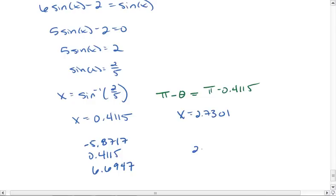Okay, for 2.7301, if I subtract 2 pi, I get negative 3.5531. And if I added 2 pi to that number, 9.0133.